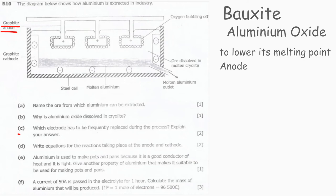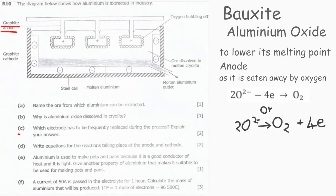Question D: Write equations for the reactions taking place at the anode and the cathode. At the anode, the oxide loses four electrons to form oxygen gas like so. At the cathode, the aluminum ion gains three electrons to form aluminum like so.